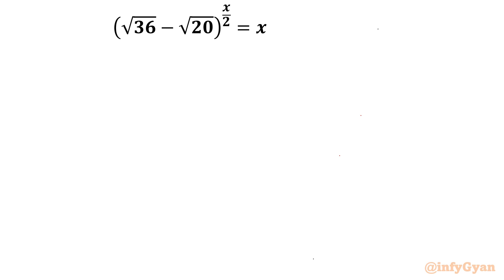While solving this problem I will use exponent properties and graph to conclude our result. I am writing this given LHS as square root of 36 minus square root 20, whole square root, and then whole power x equal to x.